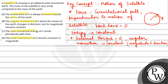Let's discuss all the options once. First option: the acceleration of satellite S is always directed towards the center of Earth. This is absolutely correct, because the centripetal force is always directed towards the center of Earth. The motion of the satellite is possible because the gravitational force equals the centripetal force, giving centripetal acceleration directed towards the center. So option A is correct.